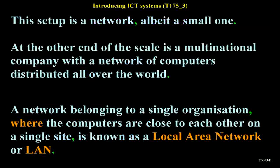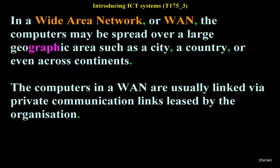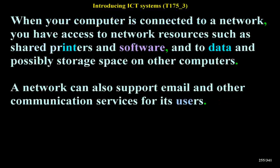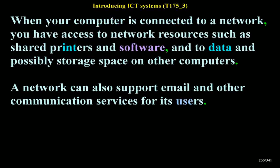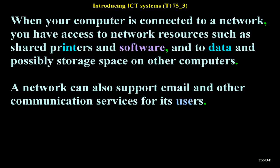A network belonging to a single organization where the computers are close to each other on a single site is known as a local area network, or LAN. In a wide area network, or WAN, the computers may be spread over a large geographic area such as a city, a country, or even across continents. The computers in a WAN are usually linked via private communication links leased by the organization. When your computer is connected to a network, you have access to network resources such as shared printers, software, data, and possibly storage space on other computers. A network can also support email and other communication services.